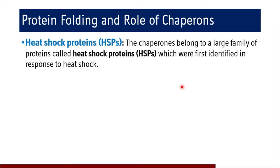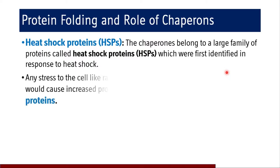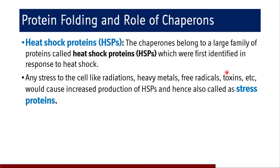Chaperones belong to a large family of proteins called heat shock proteins, which were first identified in response to heat shock. Any stress — related to radiation, heavy metals, free radicals, or toxins — would cause increased production of heat shock proteins, hence they are also called stress proteins.